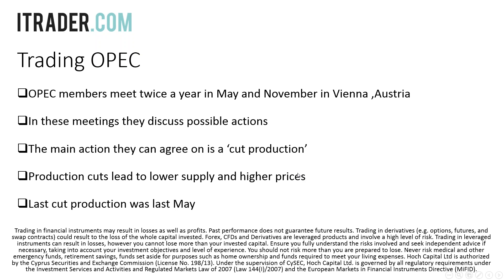So in these meetings they discuss possible actions, and the main action they want is to cut production — because if they cut production, supply goes down and prices go up. If we have less oil in the world, prices will go up. If OPEC as an organization — all 14 countries sitting together in Vienna — make a collective decision to cut production, then oil prices are supposed to go up, which means they may make more profits. But they have to agree on that.